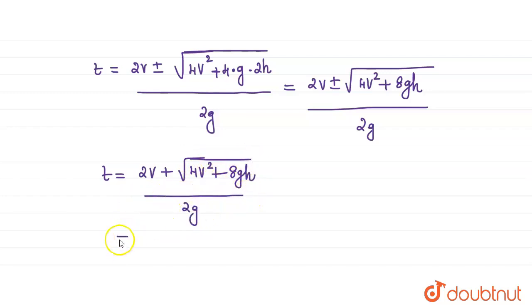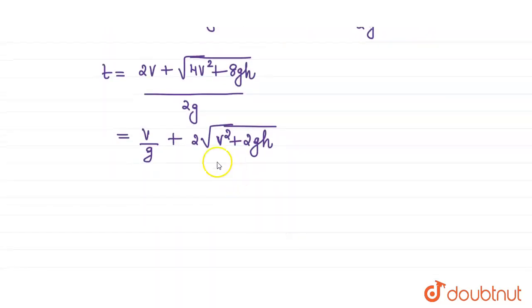We can separate this equation. That is v/g plus - by taking 4 common from the square root, square root of 4 is 2 - we get 2 times root of v squared plus 2gh, divided by 2g. We can cancel this 2g and take v/g common.